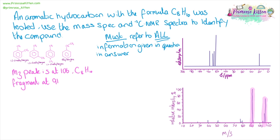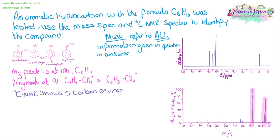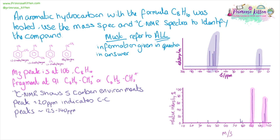On the mass spec, the m/z peak is 106, confirming the formula, and then the fragment at 91 could be one of two different things. Moving on to the carbon NMR, there are five different carbon environments in this. The peak shifted at 20 gives us carbon–carbon bonds, and the peaks shifted between 125 and 140 are indicative of an aromatic hydrocarbon, which we knew from the question.